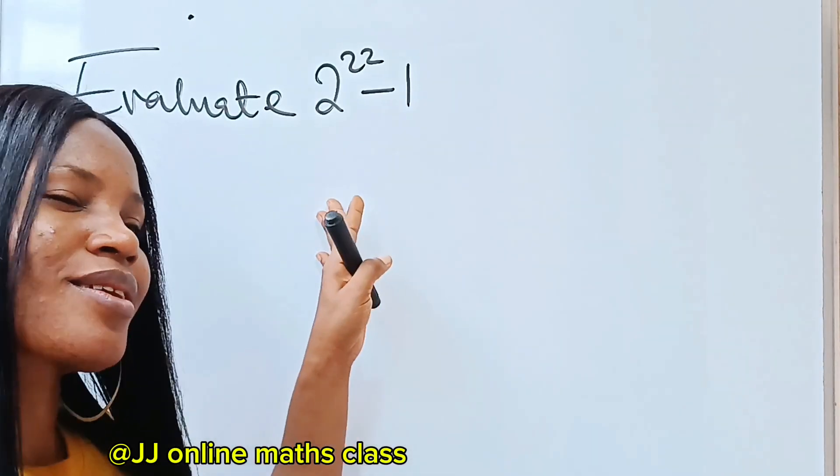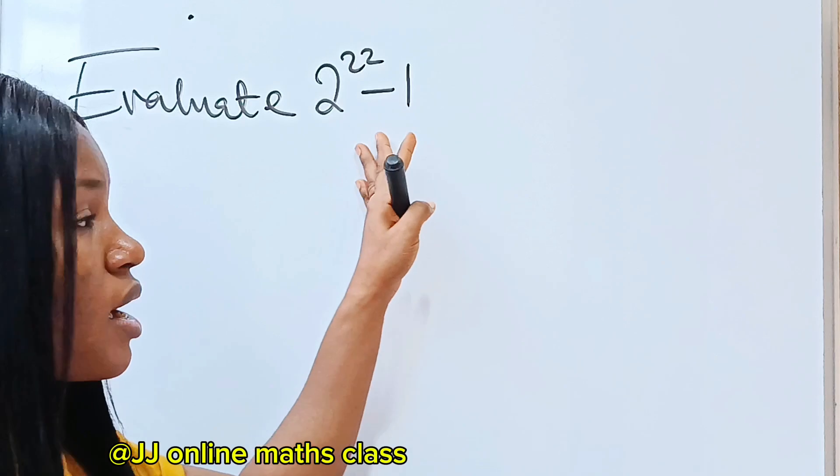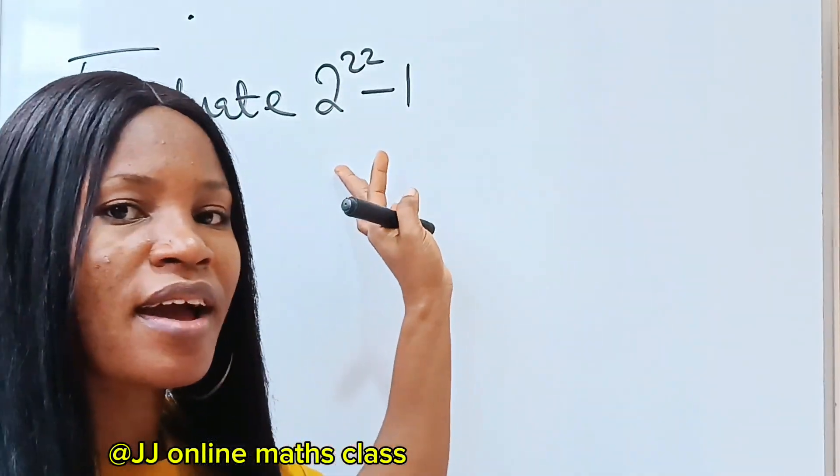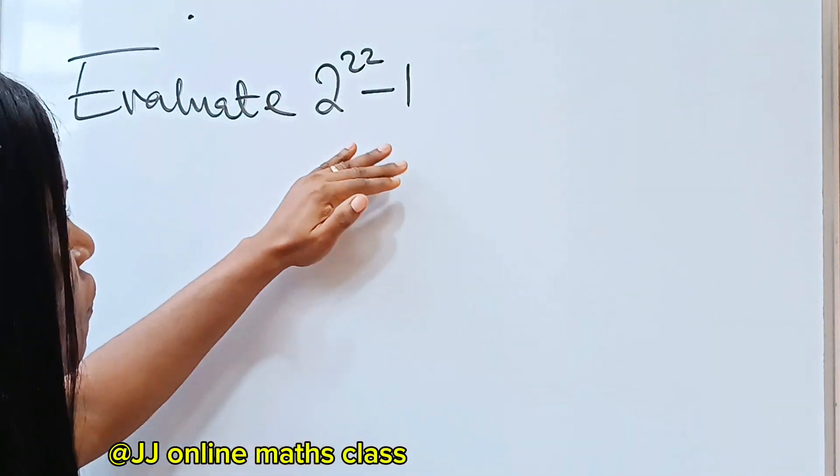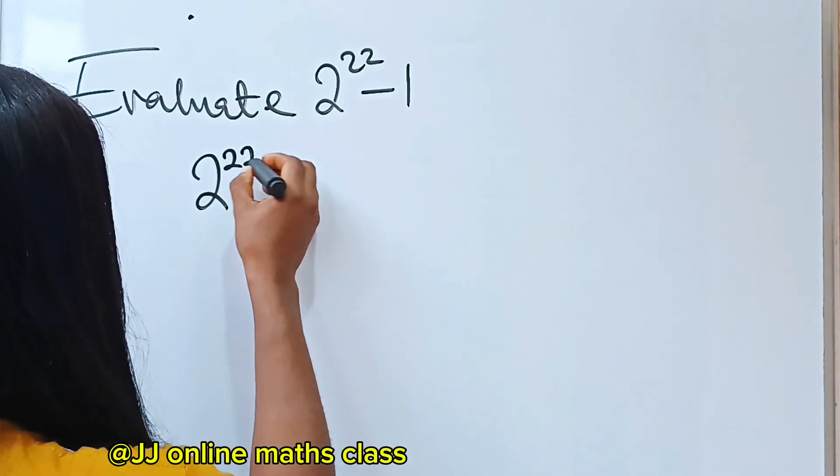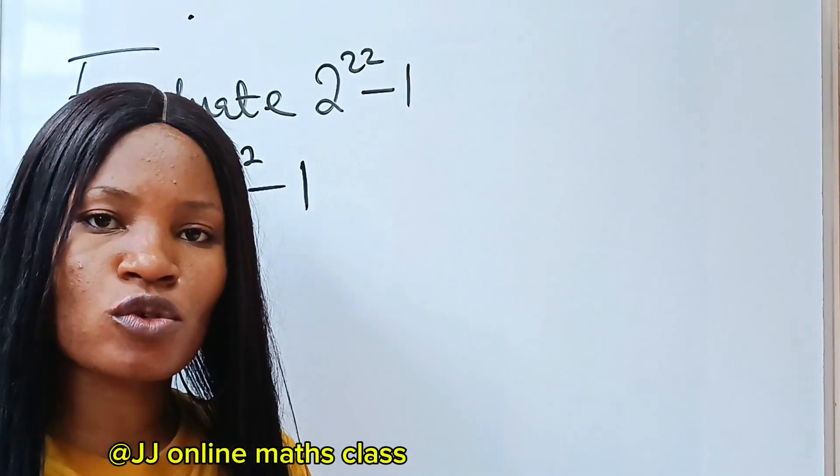This is one of the most tactical questions I've ever solved. It may sound funny, but it's tactical. Not that it's difficult, but if you are not careful, you are going to fail it. When you look at 2 to the power of 22 minus 1, you can easily make this difference of two squares.